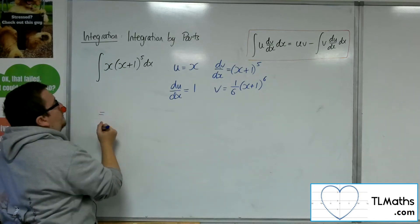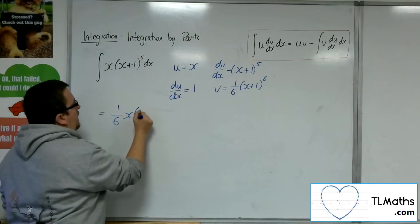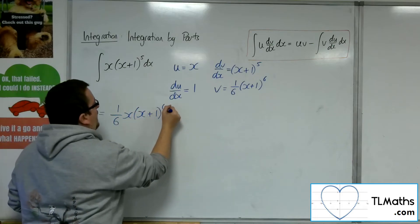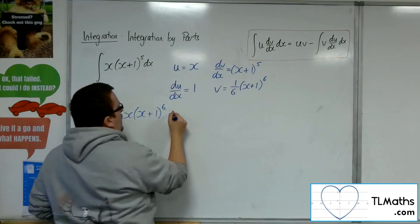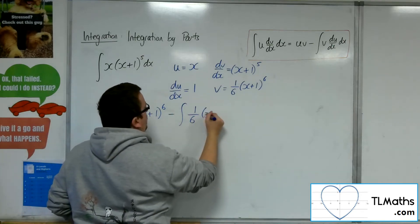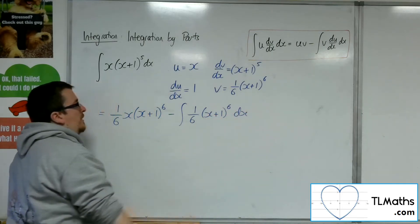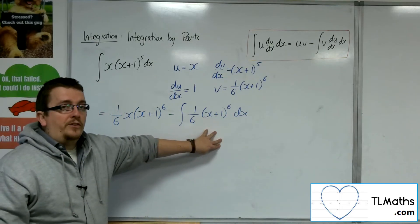So we've got u times v, so 1 sixth x, x plus 1 to the 6, take away the integral of v du by dx. So 1 sixth x plus 1 to the 6, because now this could be integrated just by reversing the chain rule.